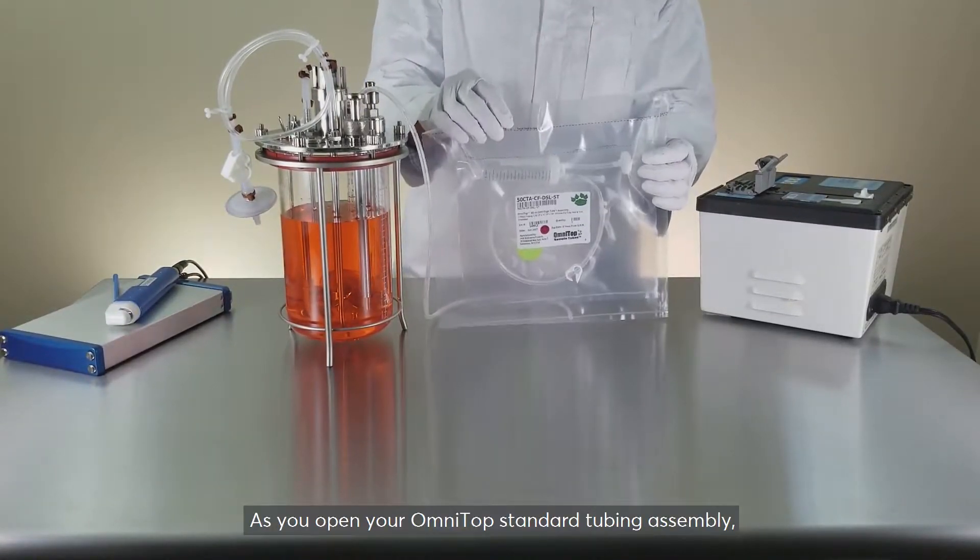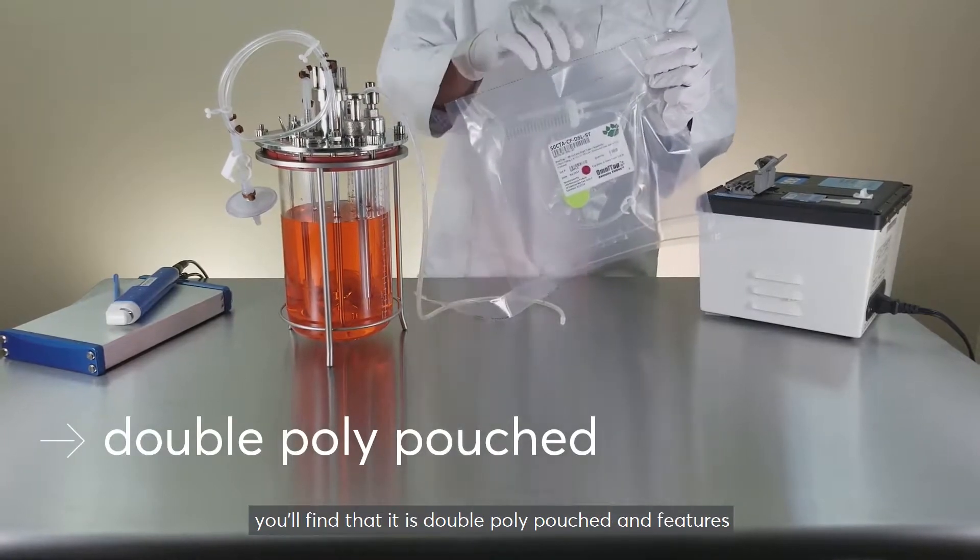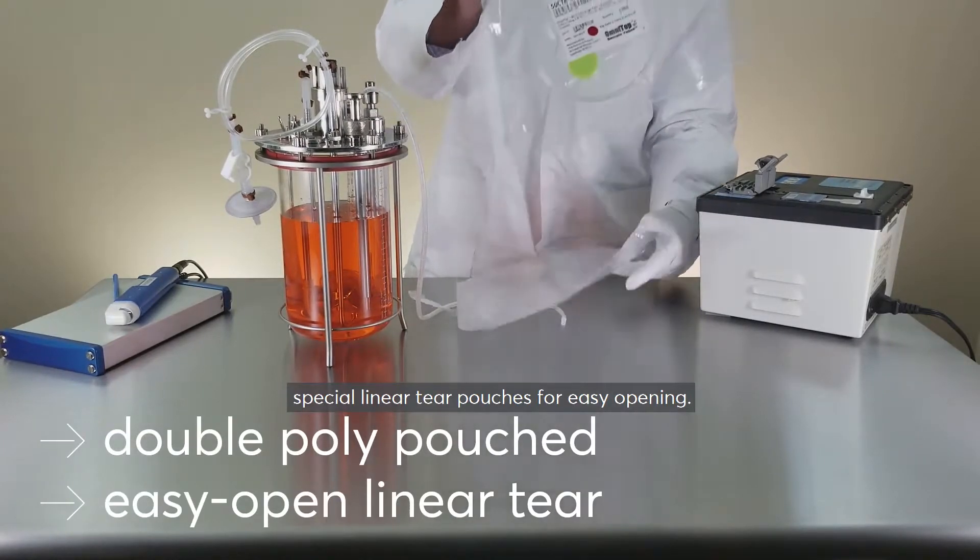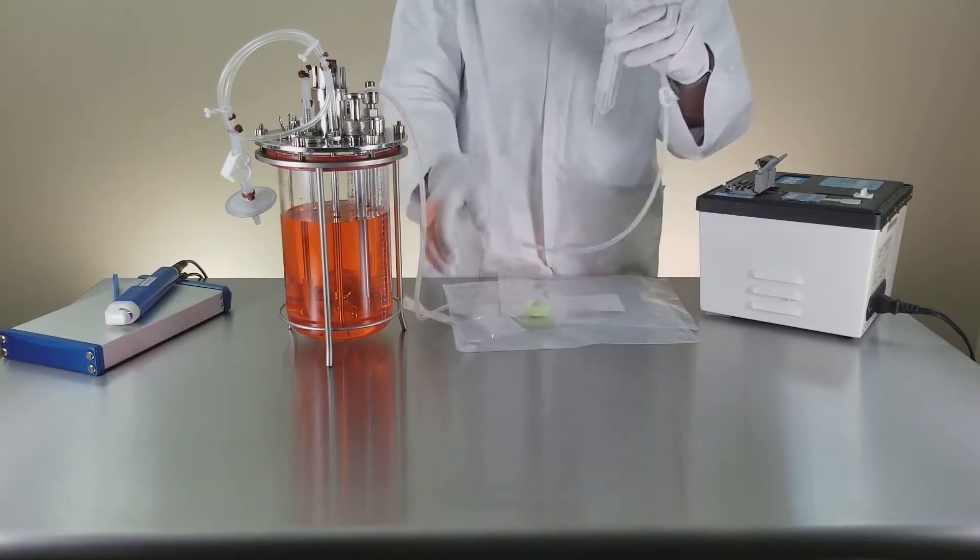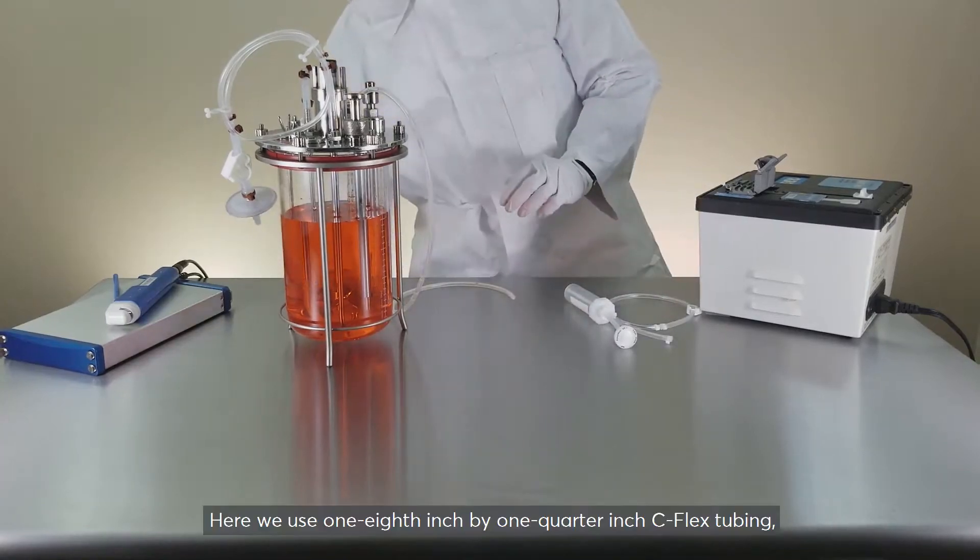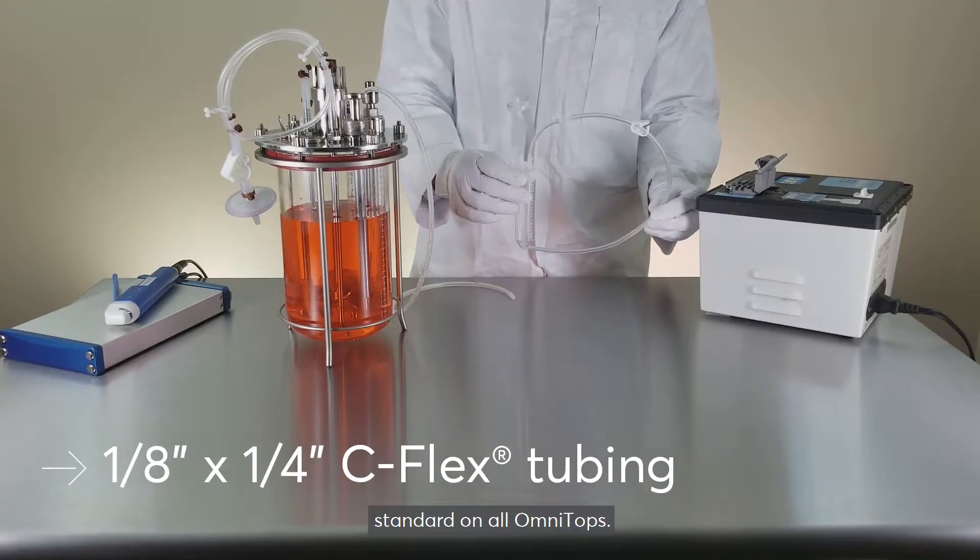As you open your OmniTop standard tubing assembly, you'll find that it is double poly pouched and features special linear tear pouches for easy opening. Here we use one-eighth inch by one-quarter inch C-flex tubing standard on all OmniTops.